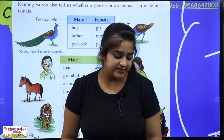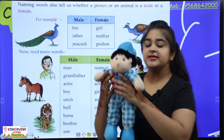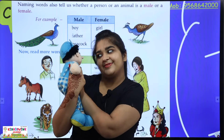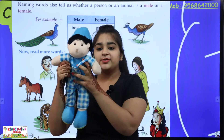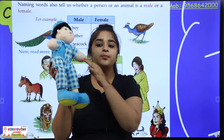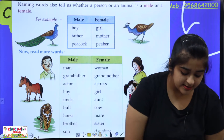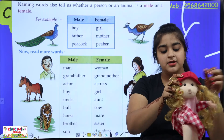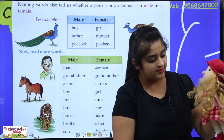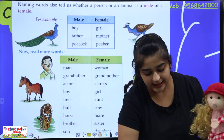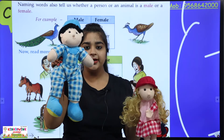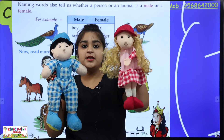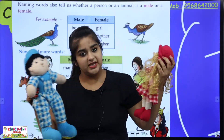I will show you some examples. Like, he is a boy and he is my brother also. Look, this one is a boy — so what is this? Male. And she is a girl — so what is this? Female. Boy — male. Girl — female.